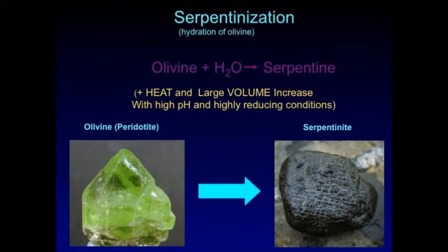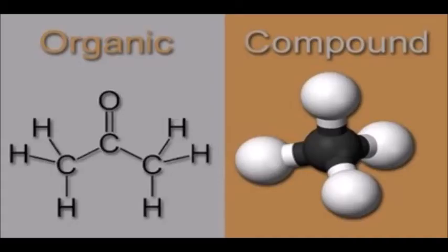Olivine becomes the mineral serpentine through the process of serpentinization, which produces hydrogen, methane, minor amounts of formate, ammonia, and calcium, with trace amounts of acetate, molybdenum, and tungsten. These compounds and elements can be used in the formation of organic compounds.